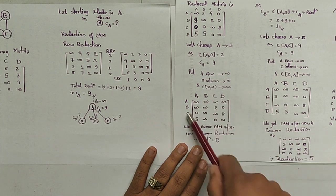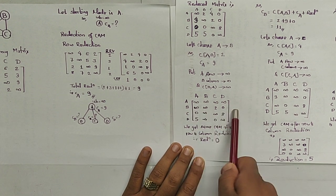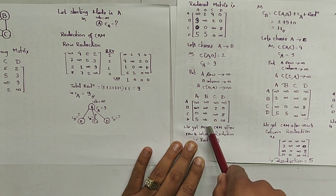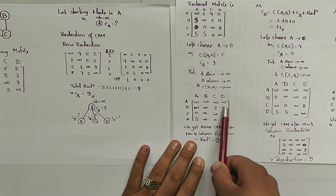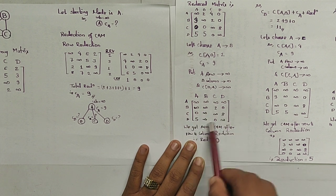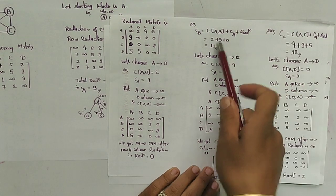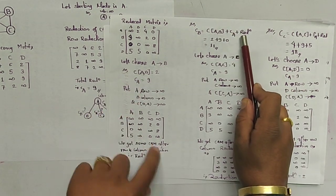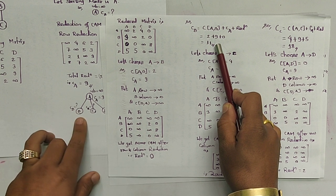After substituting infinities and performing row and column reduction, all minimum values are 0, so the total reduction is 0. The cost of node B is therefore: cost(A→B) + cost(A) + reduction = 2 + 9 + 0 = 11.